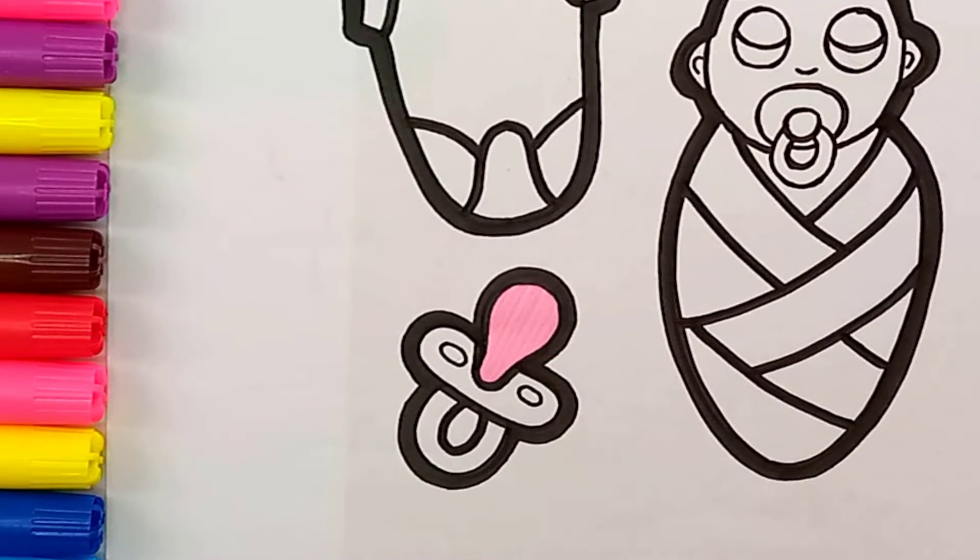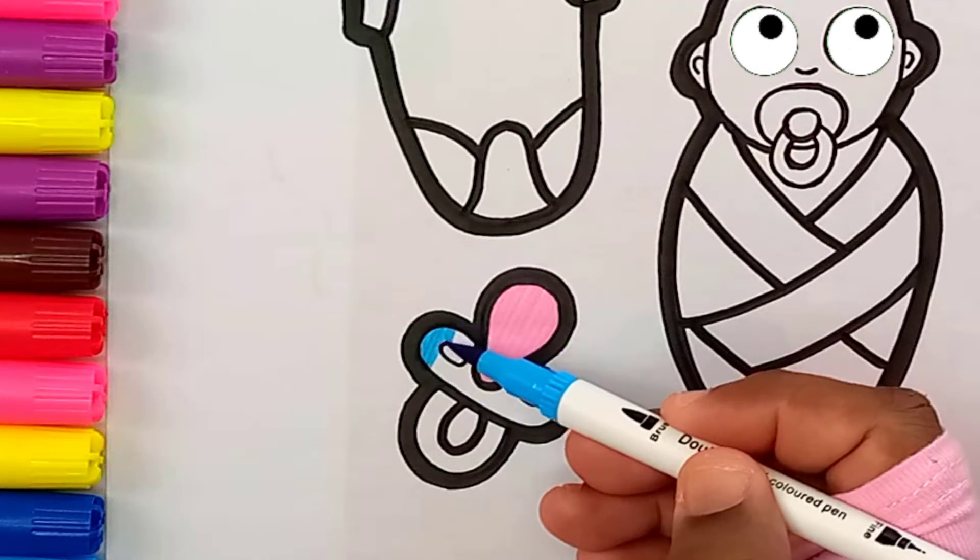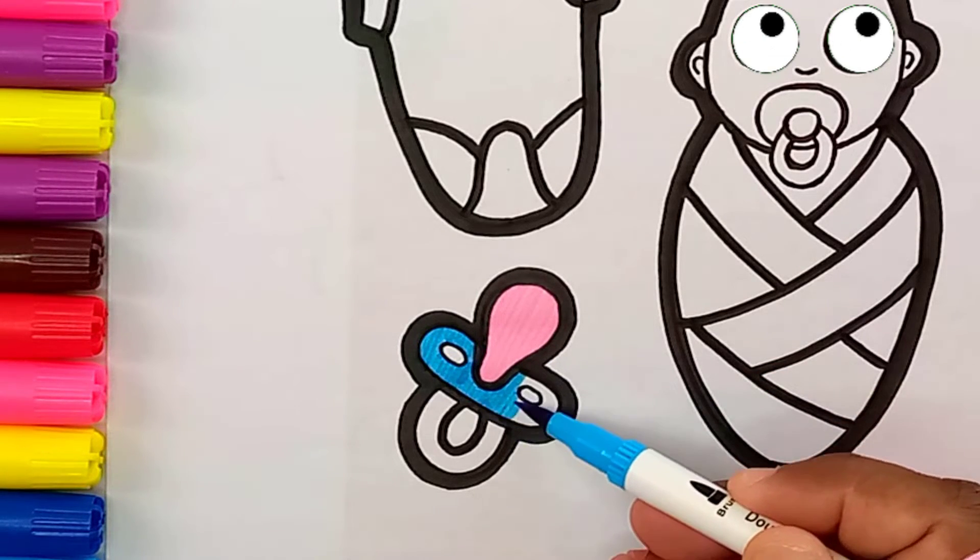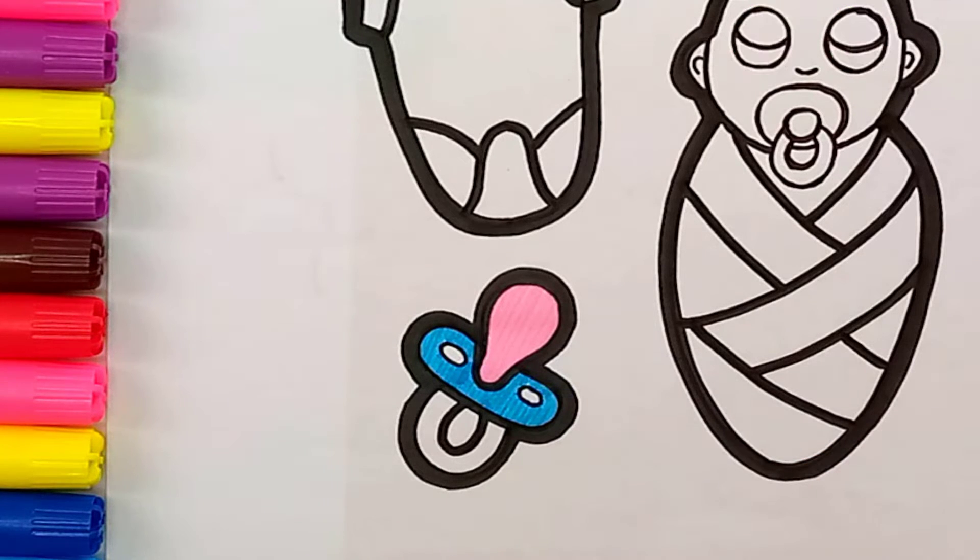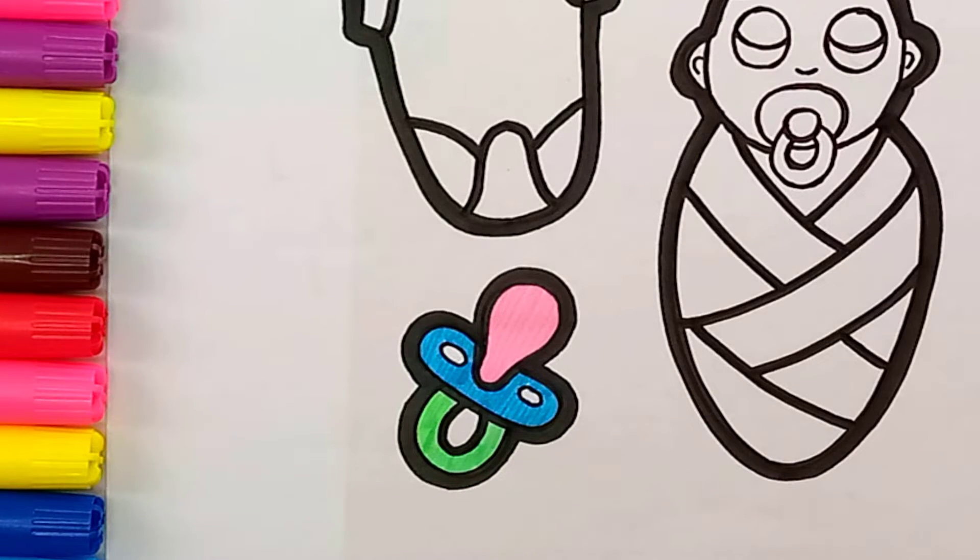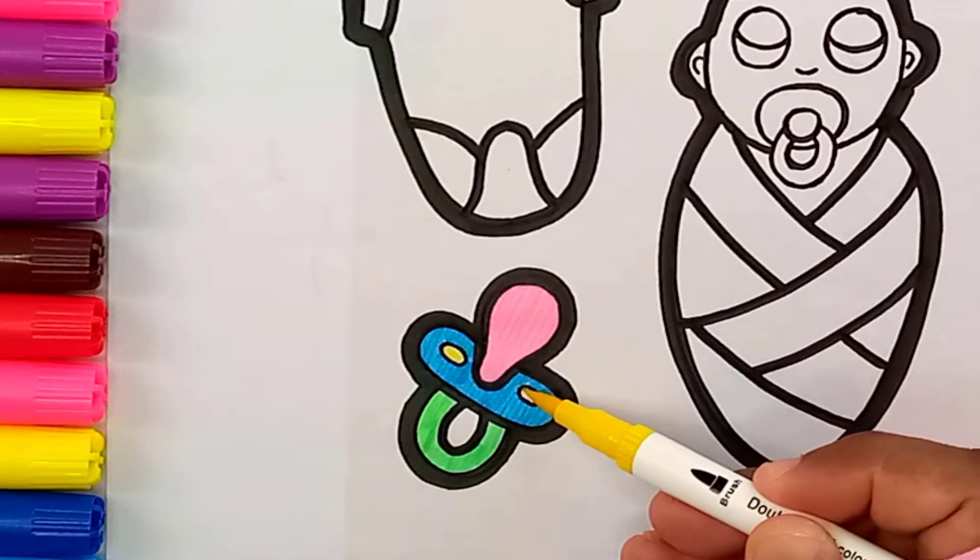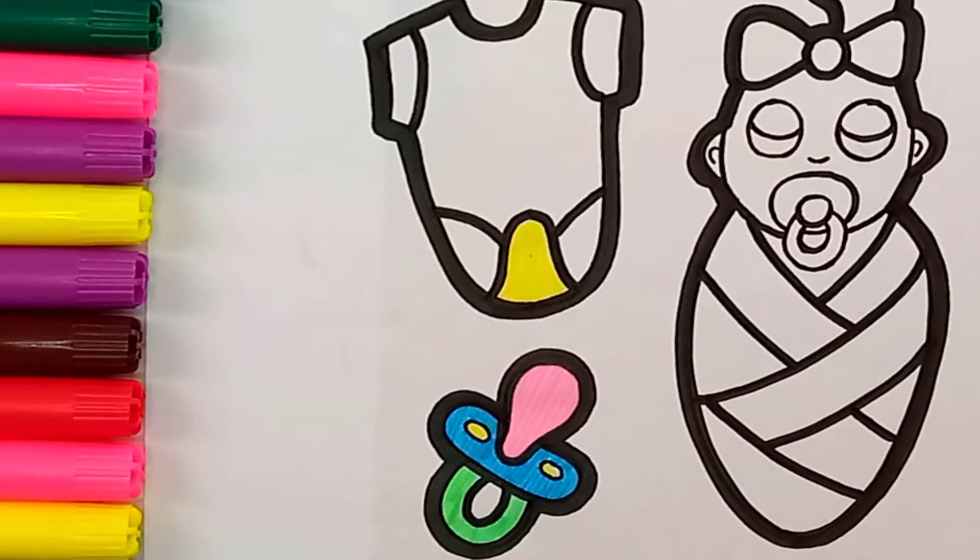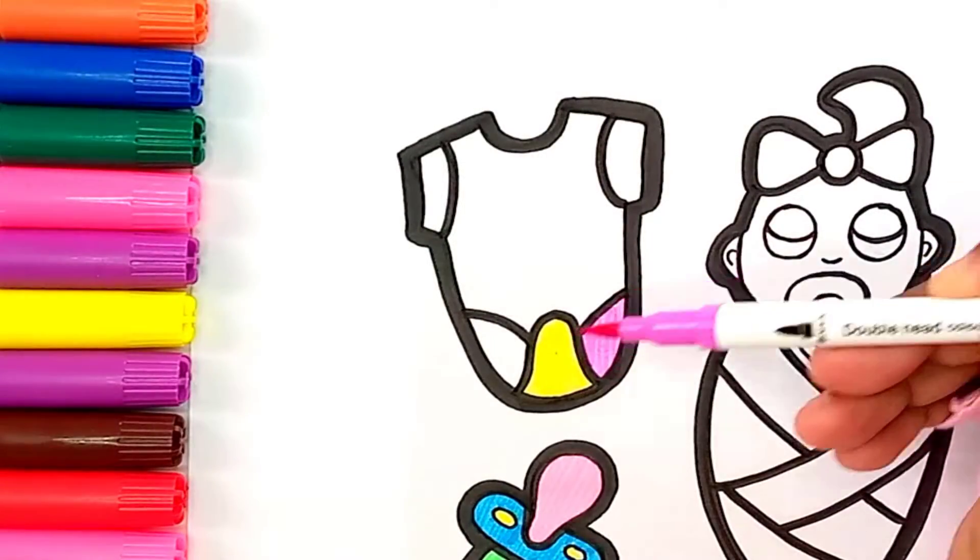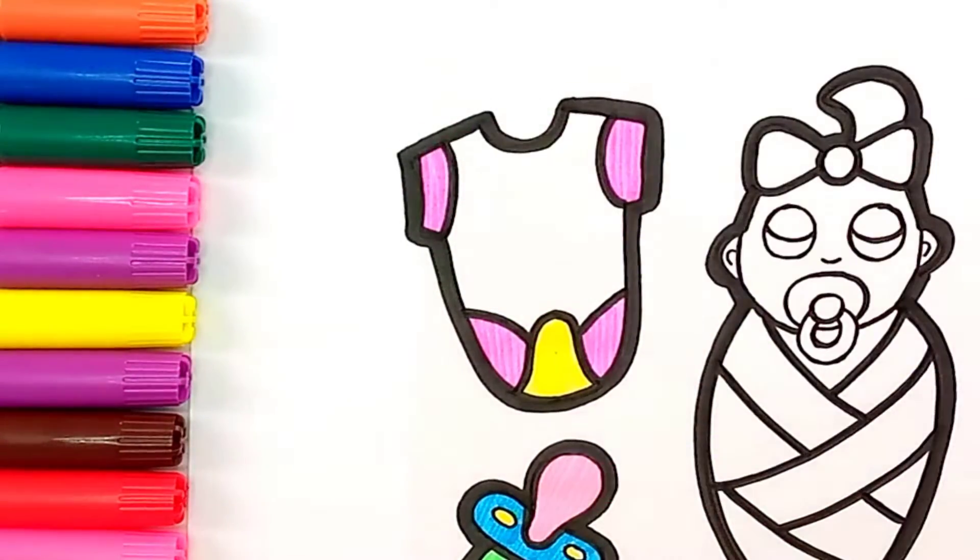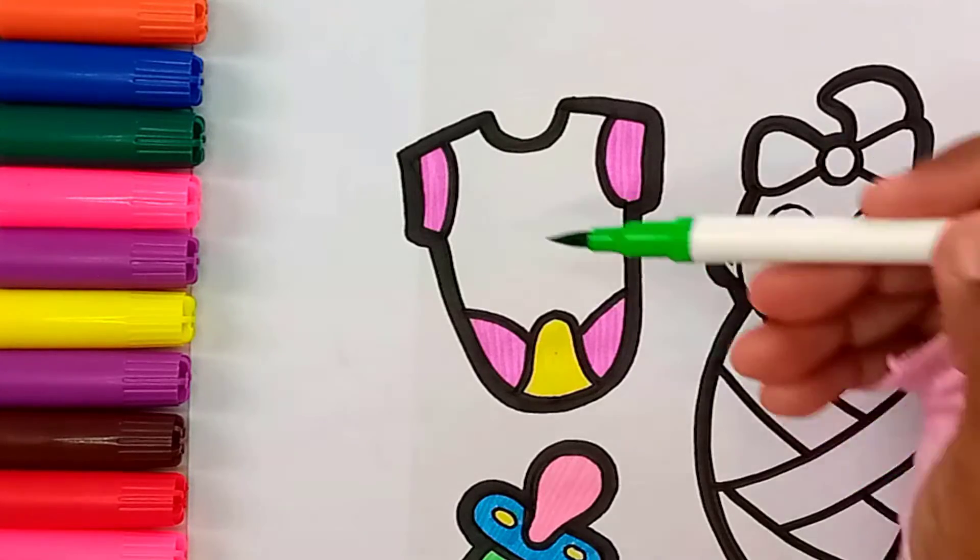First I'm coloring the pacifier with pink, blue, green, yellow. Let's color his beautiful dress: pink, green.